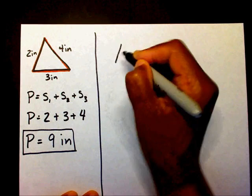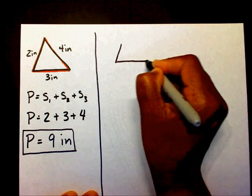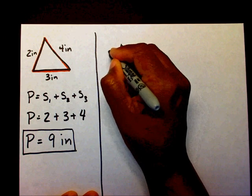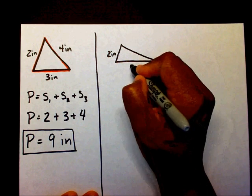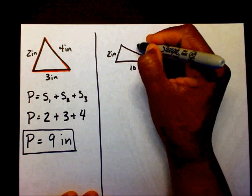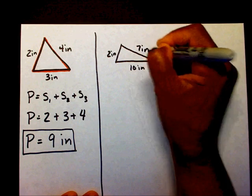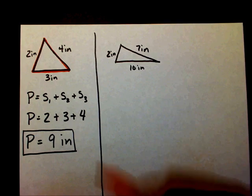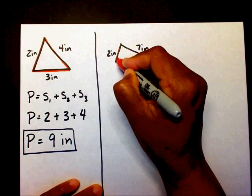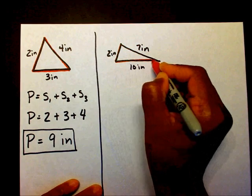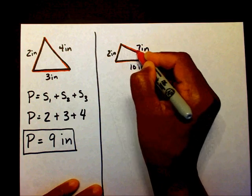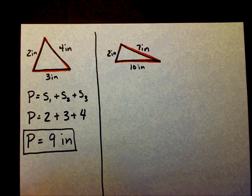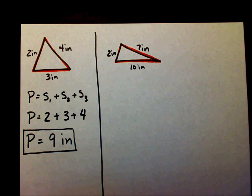Let's work another one. This side is two inches, this side is ten inches, and this side is seven inches. Again, I want to find the distance around this triangle.